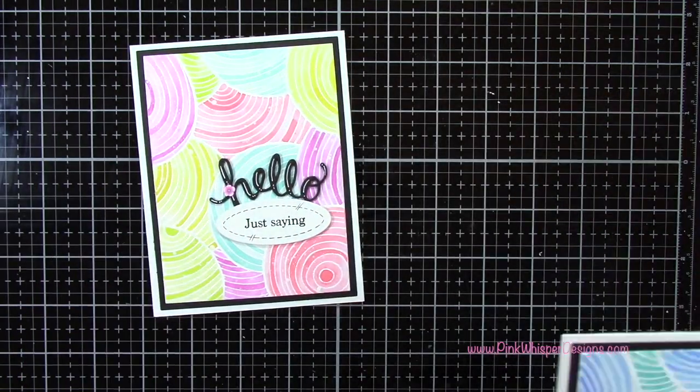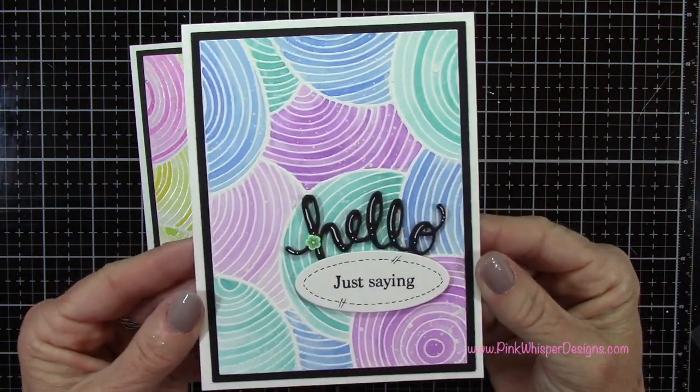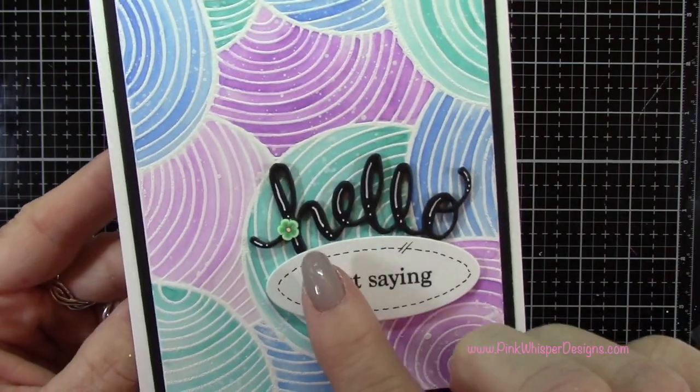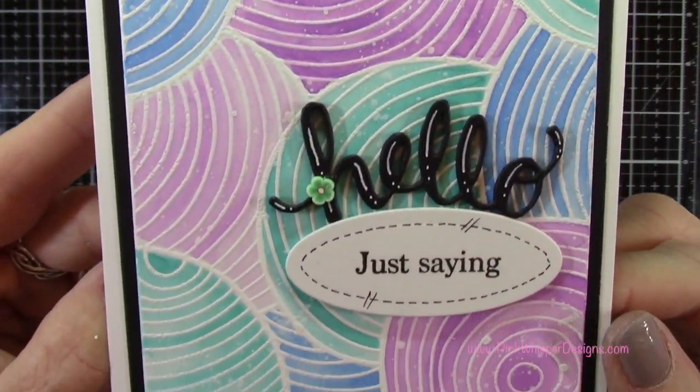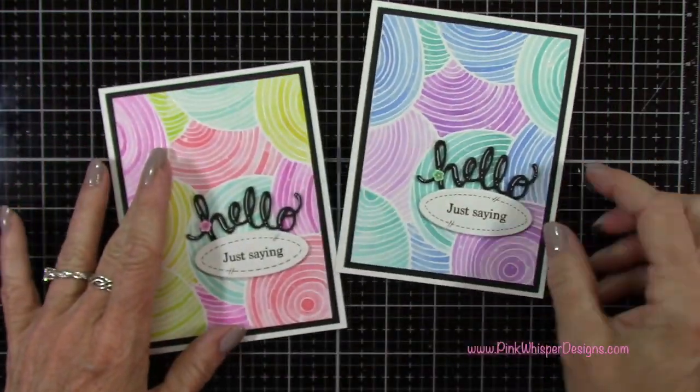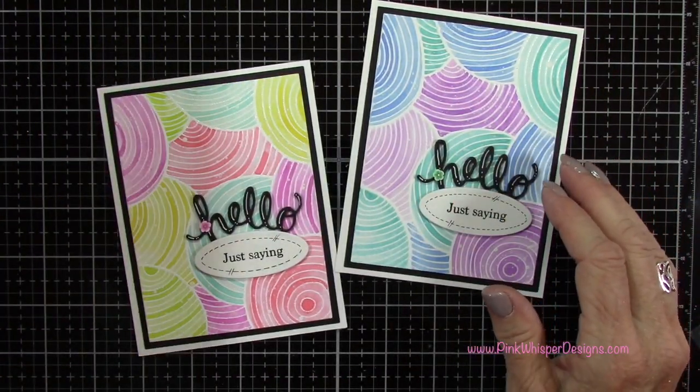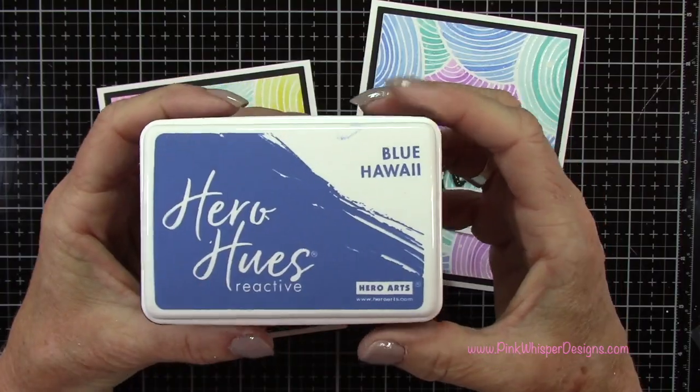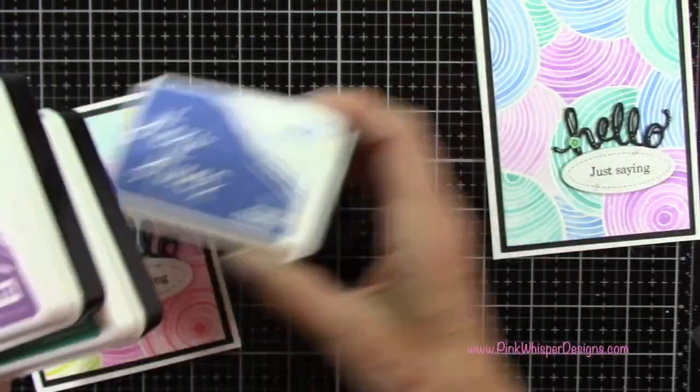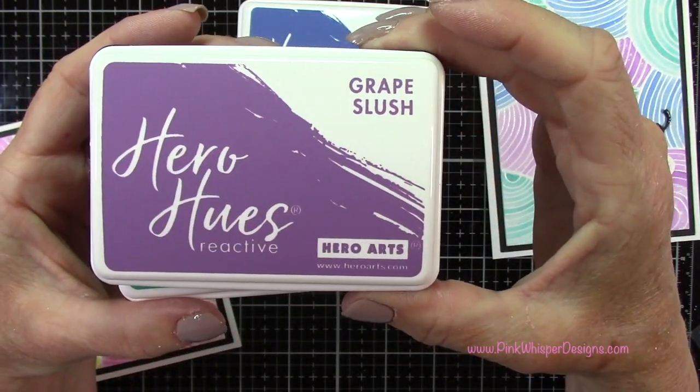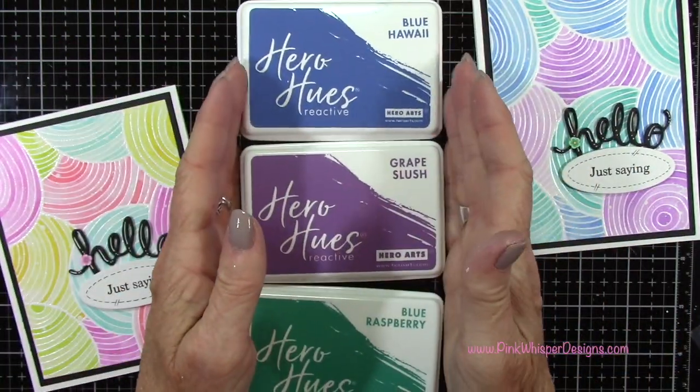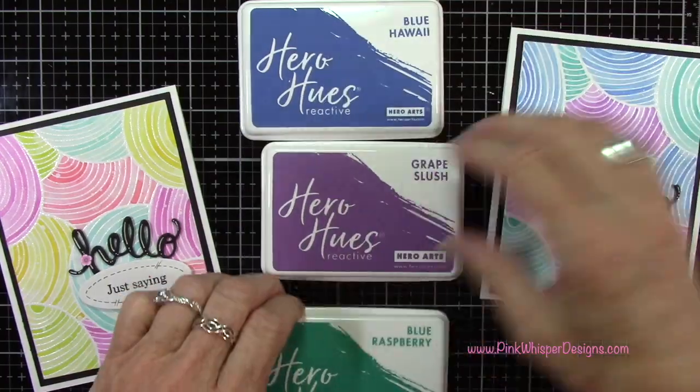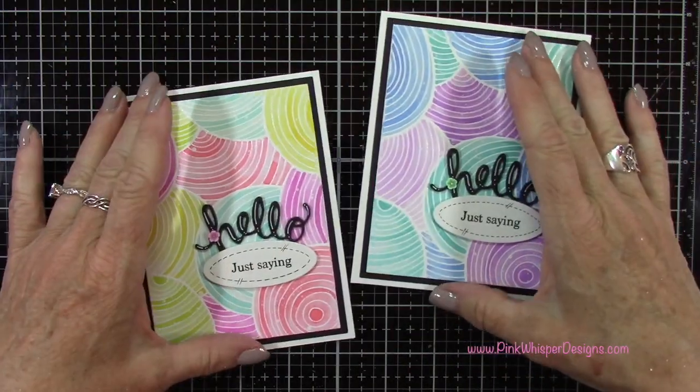I wanted to also show you that I decided to do this in a second set of colors here. And here I used the mint green flower because I thought that just looked really pretty with these colors. And for ink pads on this one I used the blue Hawaii, the grape slush, and the blue raspberry. And I just think all of these colors are so gorgeous. So those are the two cards for today.